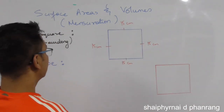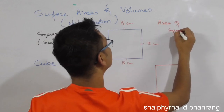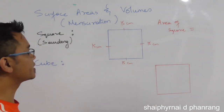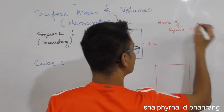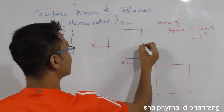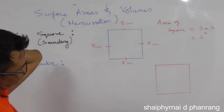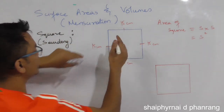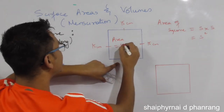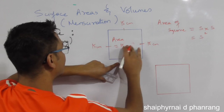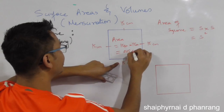This is the area of a square. If you add side into side, that gives you the area of the square. Then you multiply side into side. Then you add side into side — 15 into 15 — then you add 1 cm, then 2 to 5 cm.